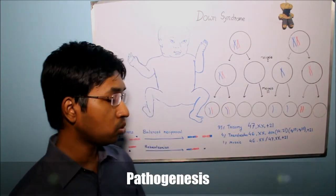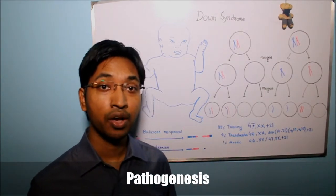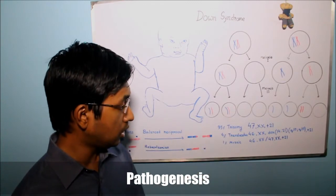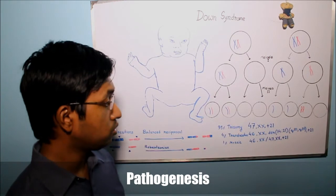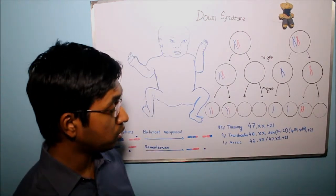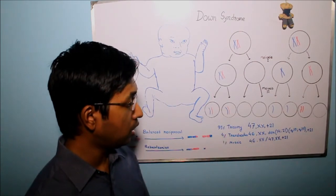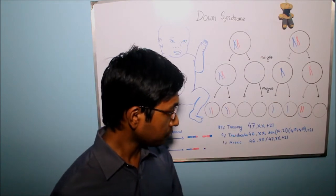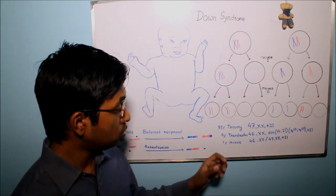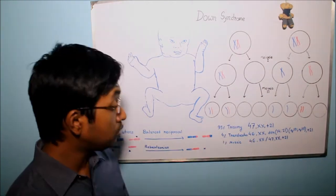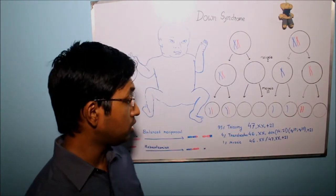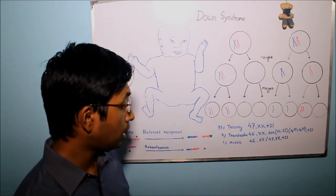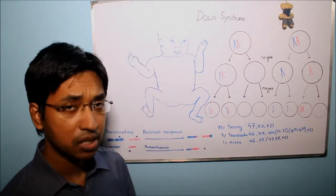Now we will talk about the pathogenesis of Down syndrome. As you can see on the whiteboard, in 95% of cases, Down syndrome occurs due to the presence of an extra copy of chromosome 21 — that is, trisomy 21. In 4% of cases, Down syndrome occurs due to Robertsonian translocation. And in 1% of cases, individuals with Down syndrome are mosaics. Let's talk about these mechanisms one by one.